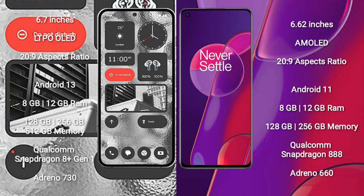OnePlus 9RT comes with 8GB and 12GB RAM, and 128GB and 256GB internal storage, with a Qualcomm Snapdragon 888 processor and GPU Adreno 660.